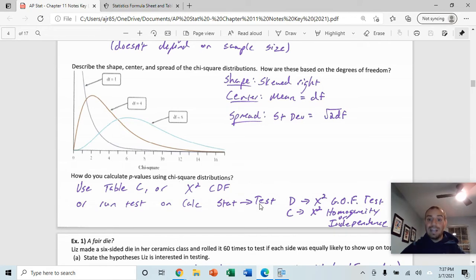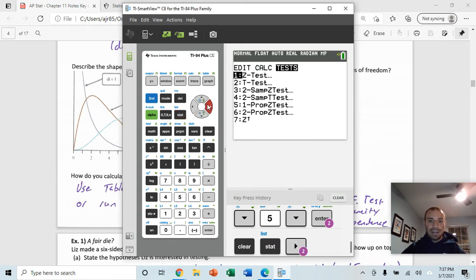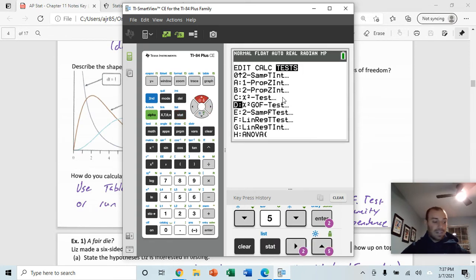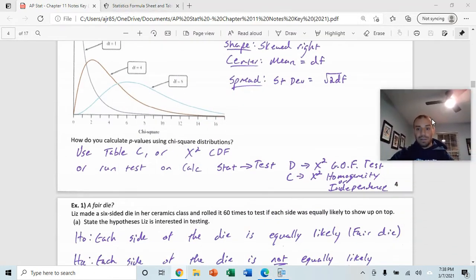The final way is you can run the test on the calculator. In order to run the test on the calculator, you'll be going to stat, over to tests. And you'll be running first, in this section, a chi-squared, looks like GOF, stands for goodness of fit tests. And then later, we'll be using just a regular chi-squared test for either homogeneity or independence. So, let's go through an example here that I've done. I'm going to walk you through this one. And then we'll look at several in class after that.